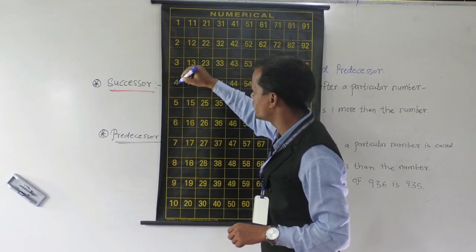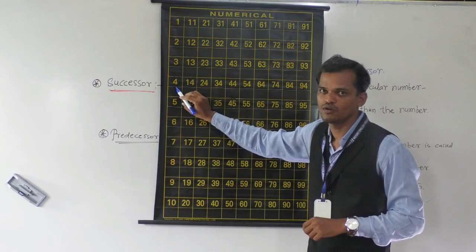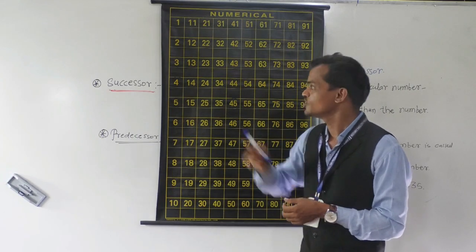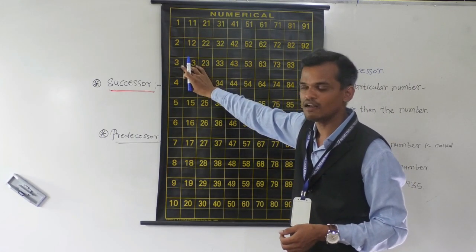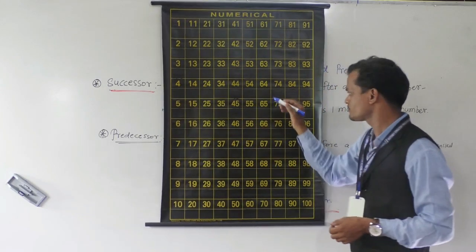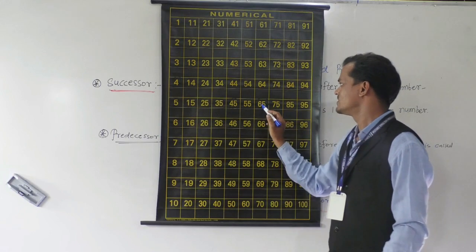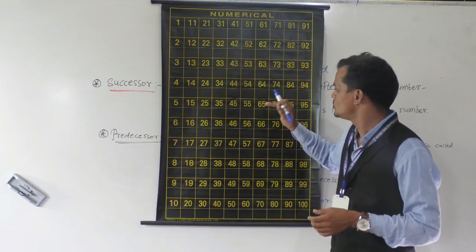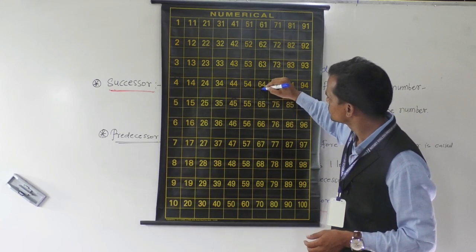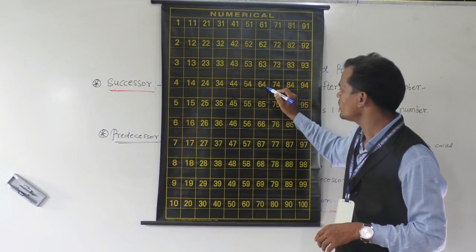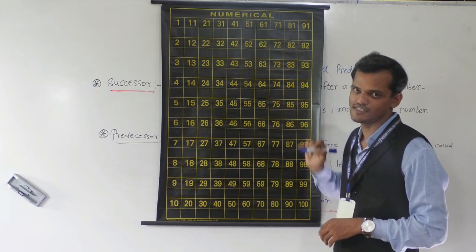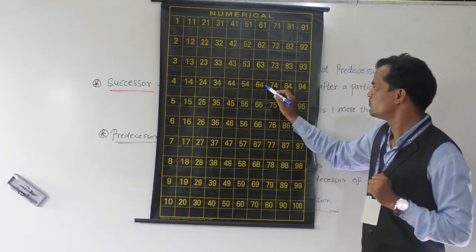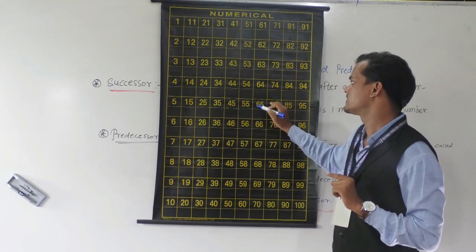Suppose the given number is 4 — which is the predecessor of 4? Just before 4, the number 3 comes. And suppose we have to find the predecessor of 65 — just before 65, 64 comes. So 64 is the predecessor of 65, and the predecessor is 1 less than the particular number — so 64 is 1 less than 65.